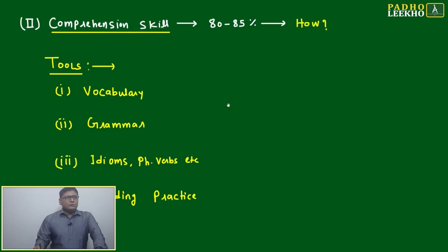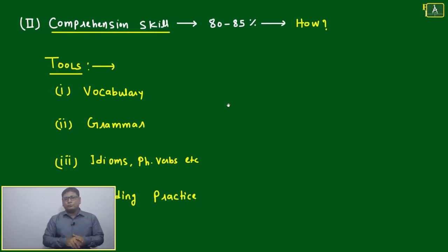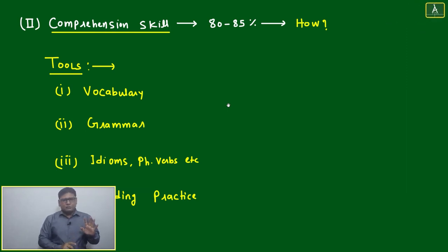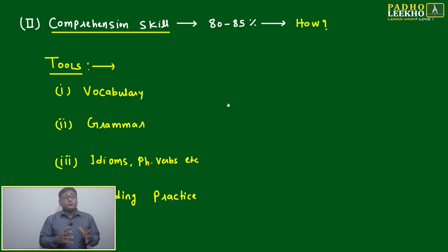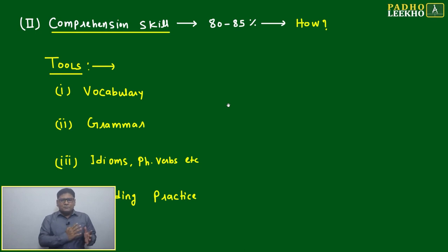Welcome to the second aspect of how to improve reading. We have discussed WPM — words per minute — and how to improve it. Now we are moving to comprehension skills.